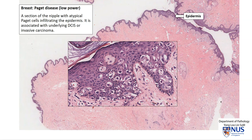We can see among the benign cells very large abnormal atypical cells with hyperchromatic large nuclei and quite abundant cytoplasm. These are the malignant cells that are present within the epidermis, and most of the time they come from DCIS in the underlying breast.